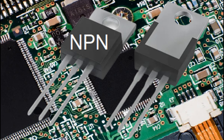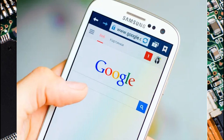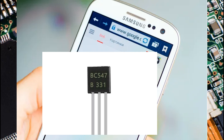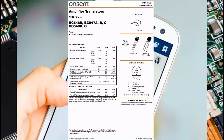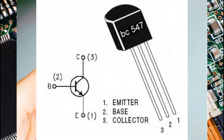Follow these steps to identify the transistor pinout using the datasheet method. 1. Take your transistor and read the number printed on it. 2. Google that number on the internet — for example, BC547. 3. Download the datasheet of the transistor. 4. In the datasheet, go to the physical structure portion. 5. Place your transistor exactly as shown in the datasheet. 6. Compare the legs — just put your transistor on your laptop screen in the exact way shown in the datasheet.